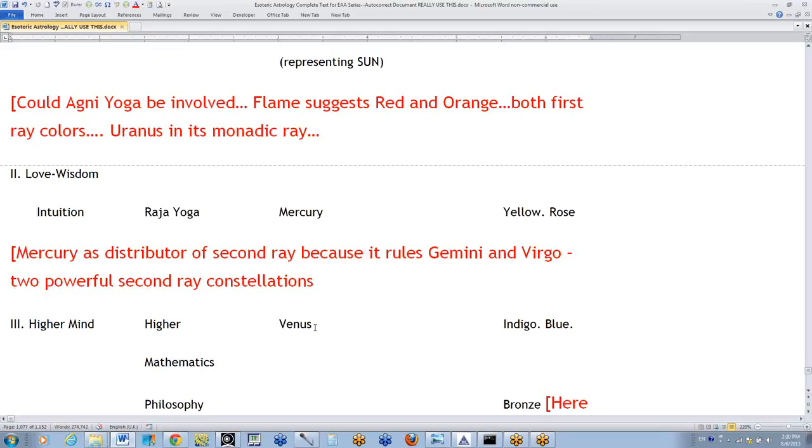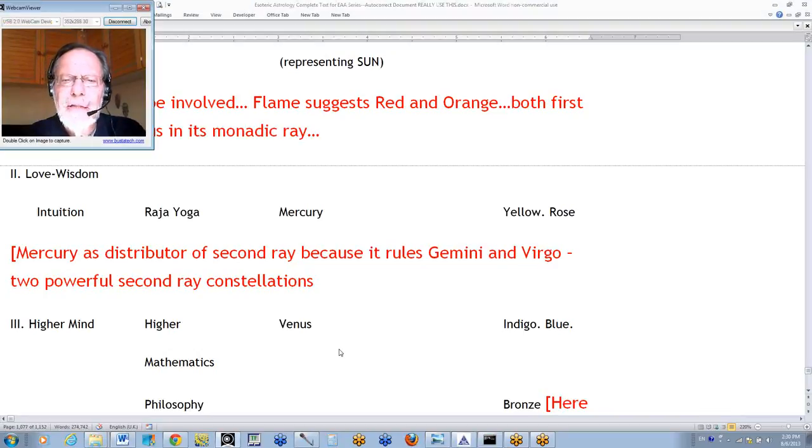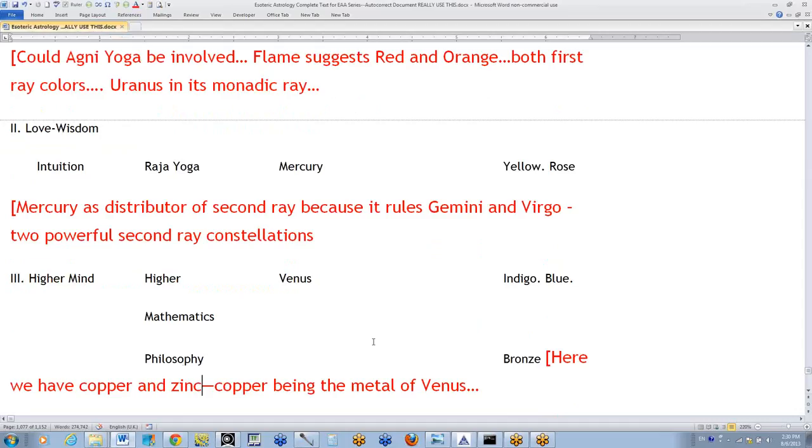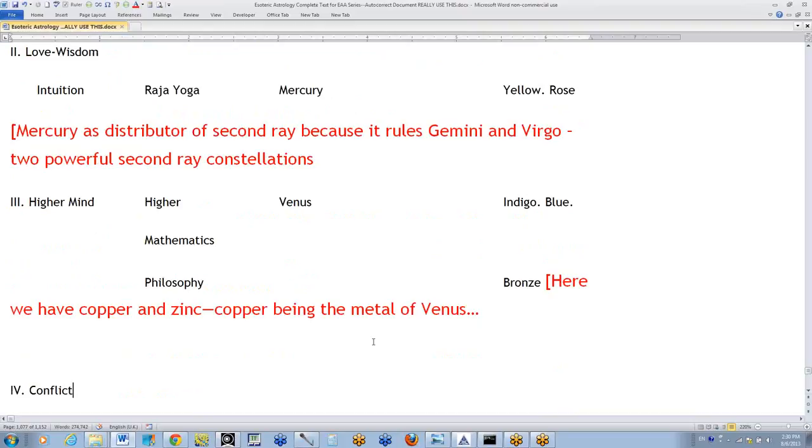Venus I've connected with the higher mind. It does seem to be the repository of the third super principle at this time. And its color is oftentimes considered to be indigo, at least in terms of its higher rays. The esoteric color of the fifth ray, however, is indigo. And we have the blue of the higher rays of Venus. And bronze is related to copper.